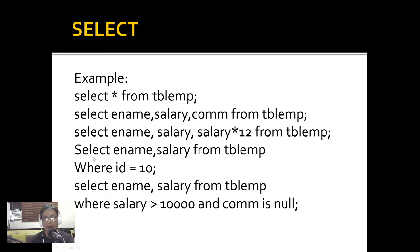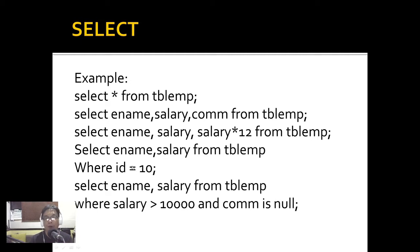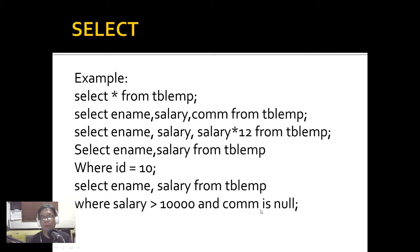Here is another example: SELECT ename, salary FROM tblm WHERE id = 10. That means I will only display a record if the id equals 10 — that's the condition. If satisfied, the row is included in the result set. Then: SELECT ename, salary FROM tblm WHERE salary > 10000 AND commission IS NULL — that's a compound condition.